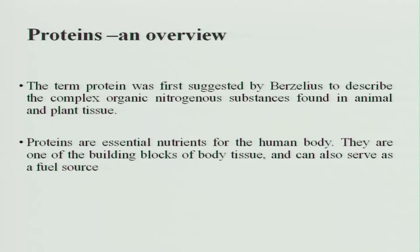The term protein was first suggested by Berzelius, and he described a complex organic nitrogenous substance found in animal and plant tissue. Proteins are essential nutrients for the human body; they are one of the building blocks of body tissue, and they also serve as a fuel source or source of energy to the body.